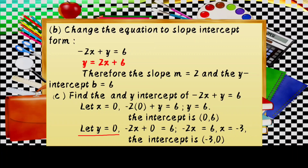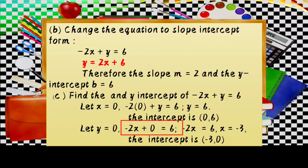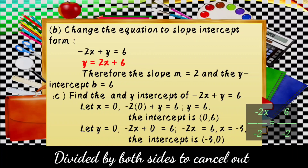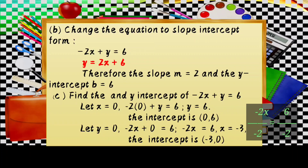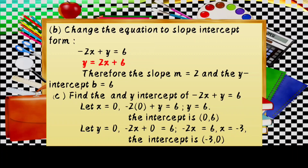Let y equal 0: substitute — negative 2x plus 0 equals 6, so negative 2x equals 6. Divide both sides by negative 2 to cancel: x equals 6 divided by negative 2, which equals negative 3. So the x-intercept is the point (-3, 0).